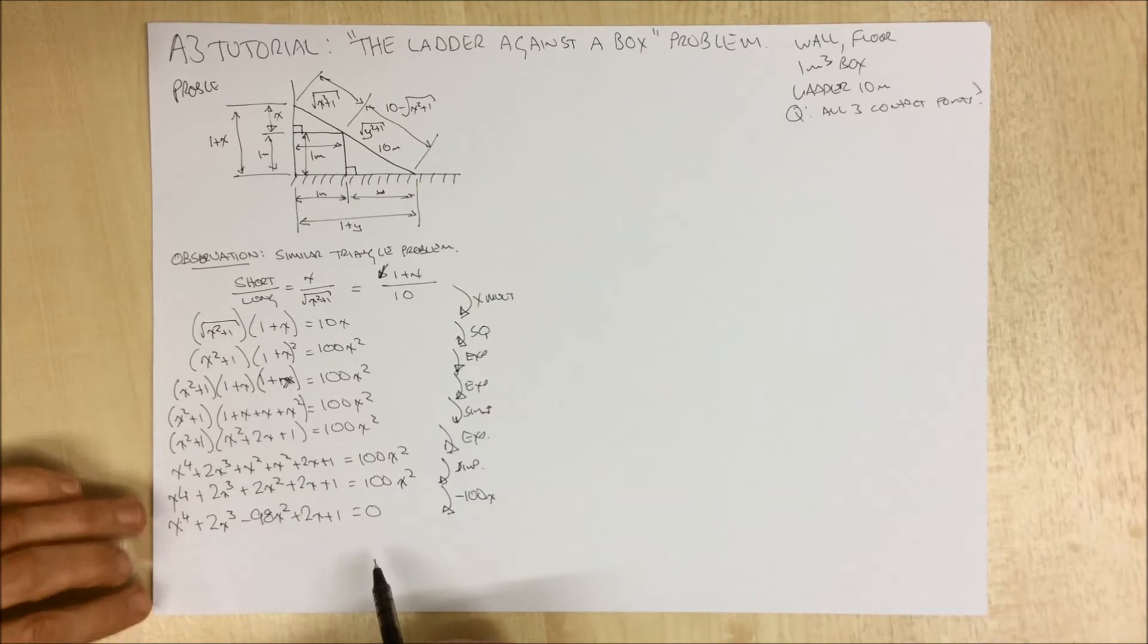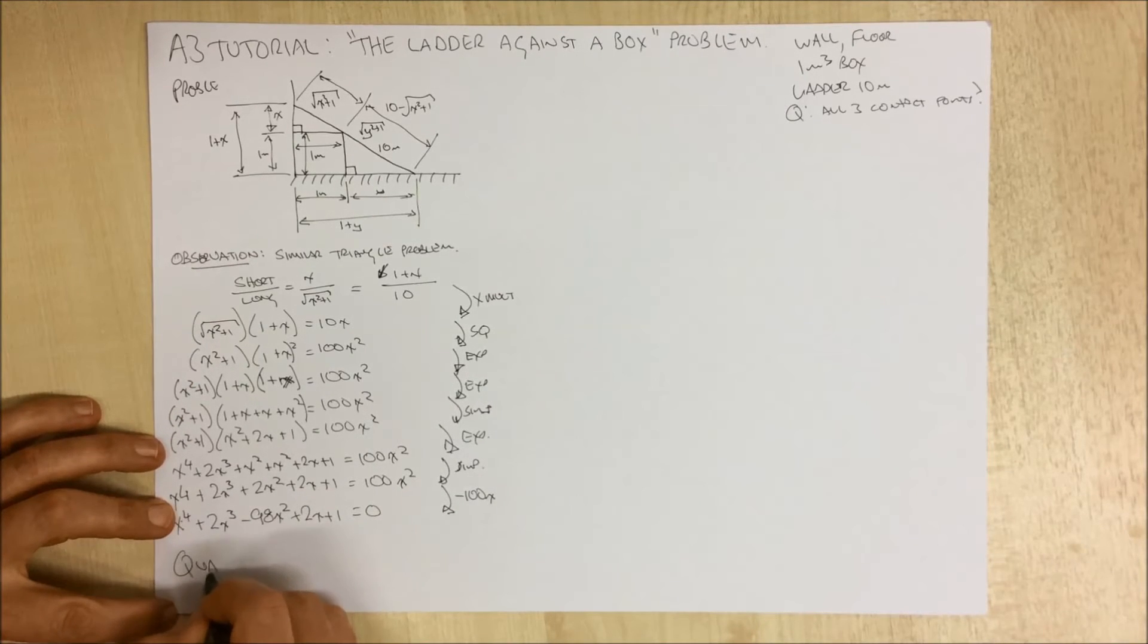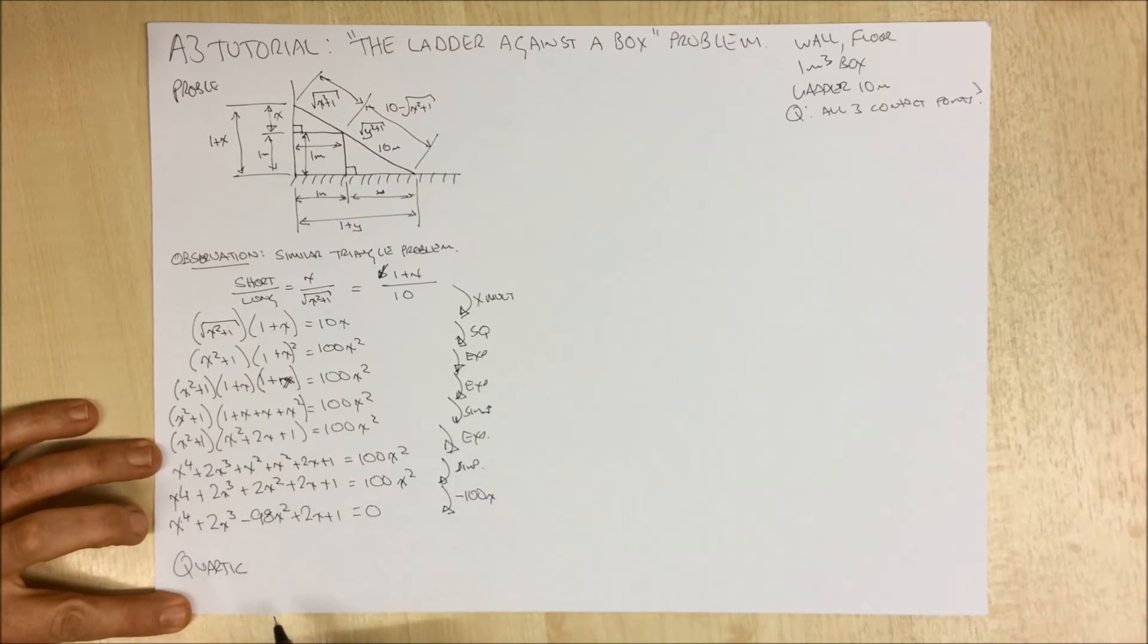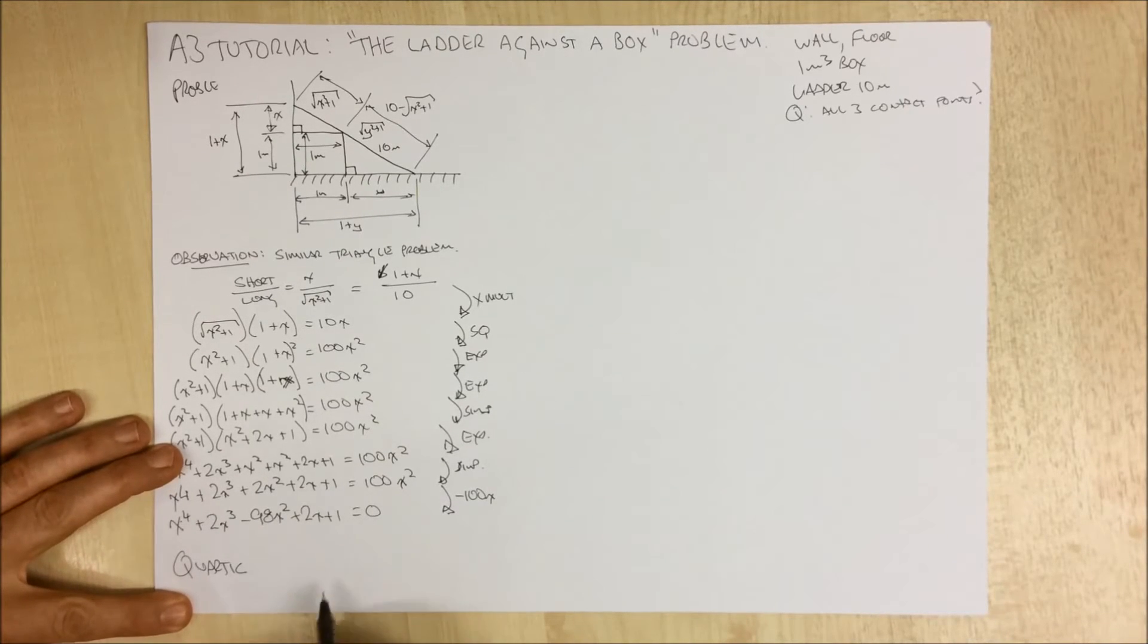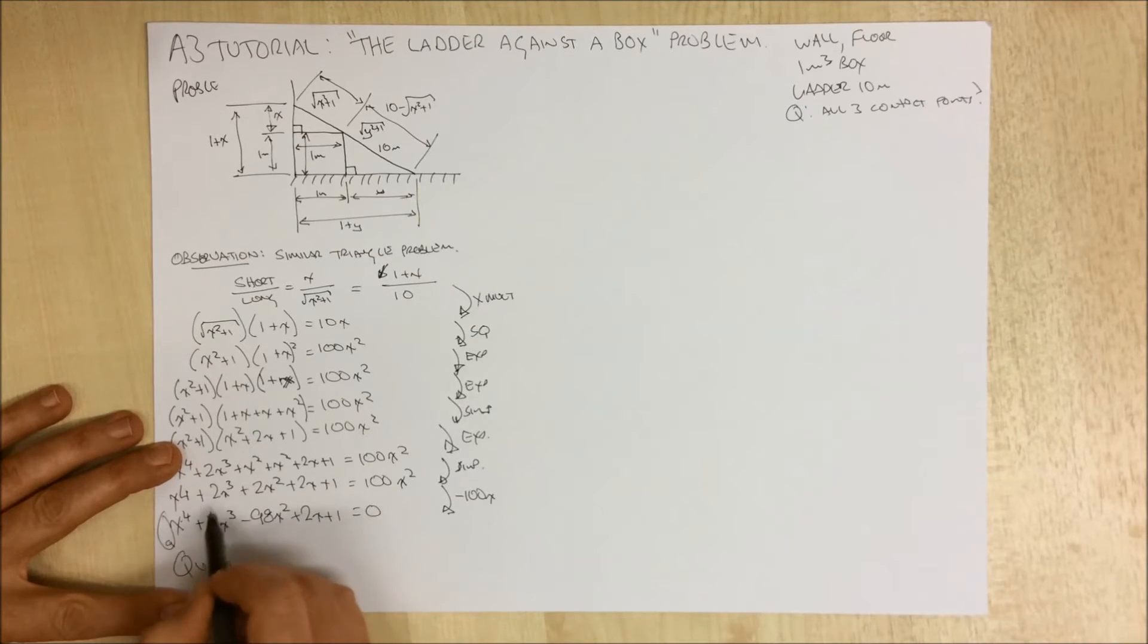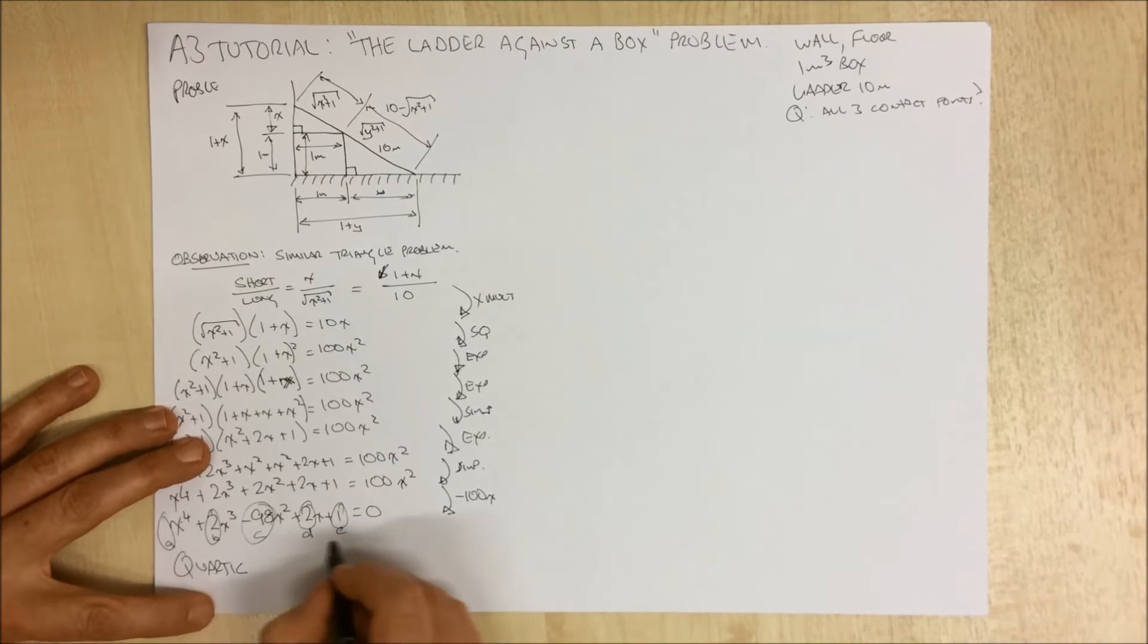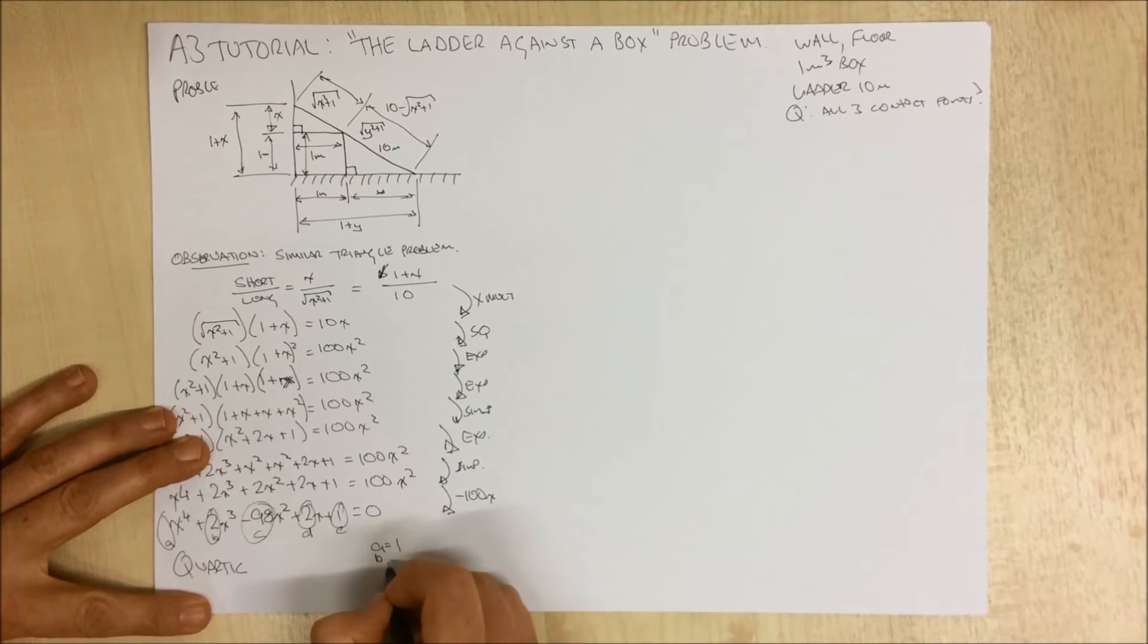And that will give us x to the 4, 2x cubed minus 98x squared plus 2x plus 1. Now we've got all of this solved down to what's called a quartic. In our quartic, we can solve a quartic. It's not the easiest thing to do, but it can be done. So we need to understand that this is the value of a, this is b, this is c, this is d, and this is e. So a equals 1, b equals 2, c equals minus 98, d equals 2, and e equals 1.